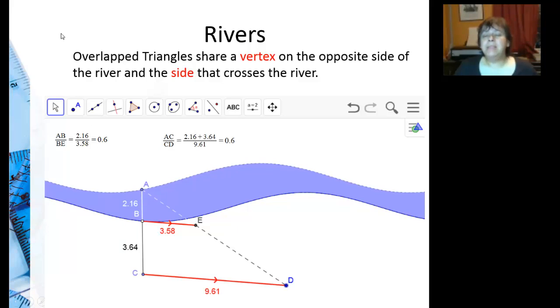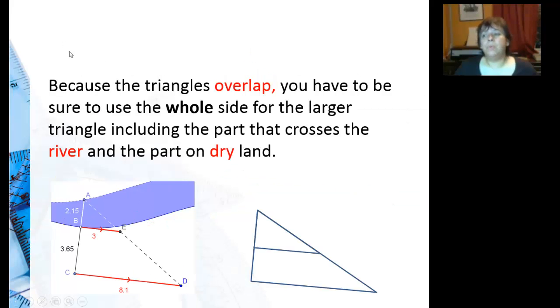Okay, so the main thing to remember, these are trickier problems. Because the triangles overlap, you have to be sure to use the whole side for the larger triangle, including the part that crosses the river and the part on dry land.